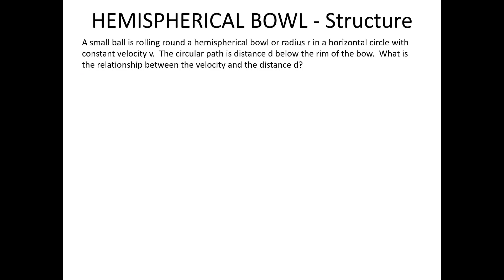The first one I want to look at is a ball rolling round the inside of a hemispherical bowl. We've got a hemispherical bowl of radius r and a bead moving round in a horizontal circle with constant velocity v at some distance d below the rim. Here is the hemispherical bowl radius r with that point p representing the bead at distance d below the rim.